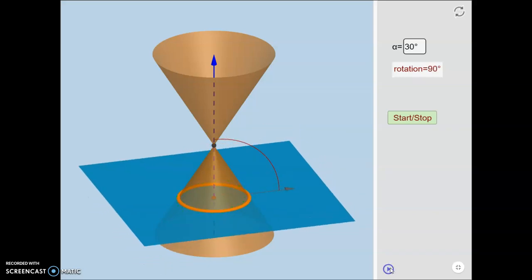Oh, beautiful. There we go. The plane is actually parallel to the base of the cone. Now, what shape are you seeing here? What you're seeing is actually a circle. A circle is one of the conic sections.